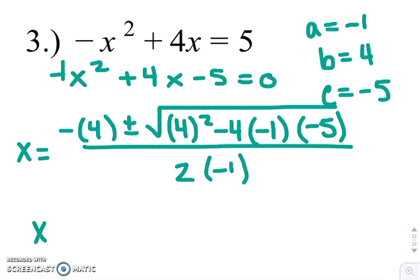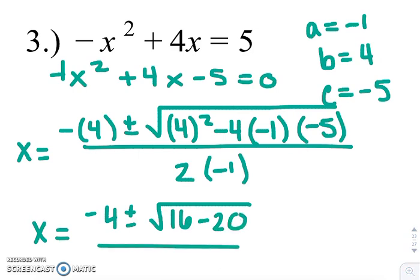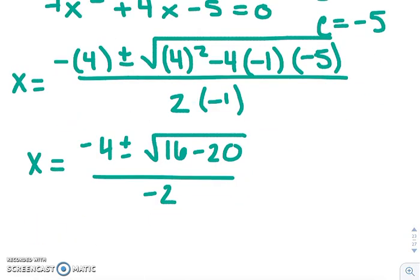We get x equals -4 plus or minus √(16 - 20) over -2. So underneath our square root will be -4.